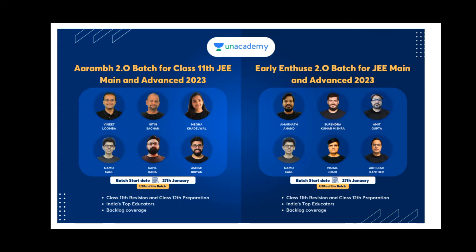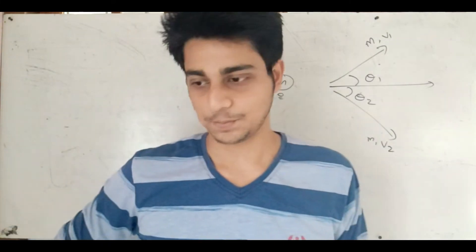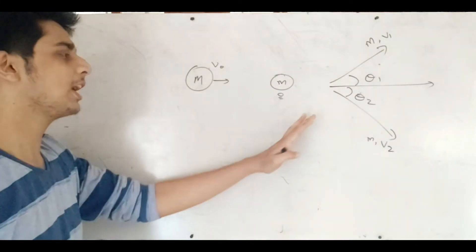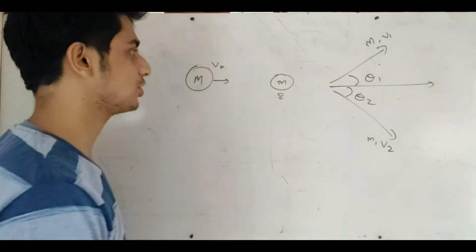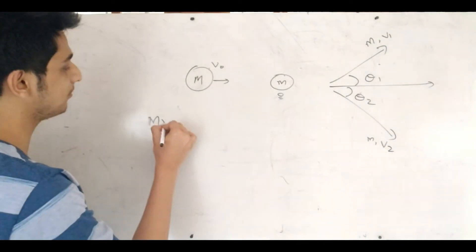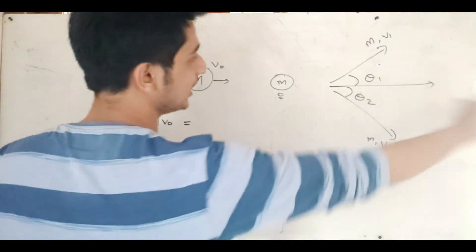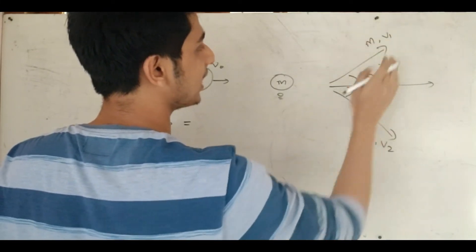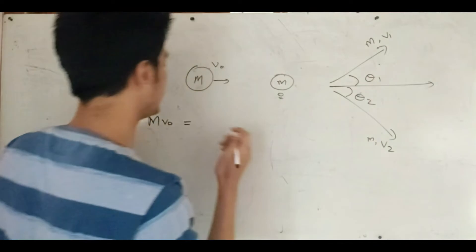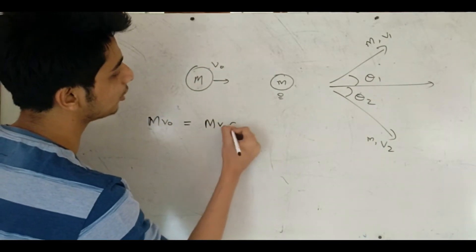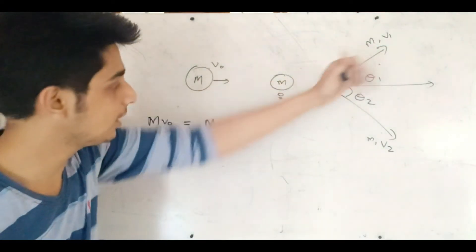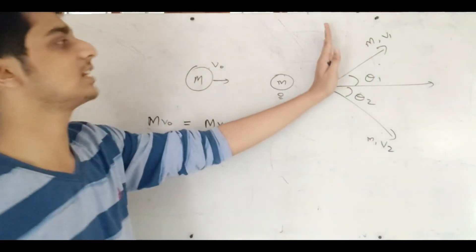I am going to show you how to do it. What have we done with the solution? The solution uses the law of conservation of linear momentum. The initial momentum is MV0, and that equals the final momentum in the x-direction: MV1 cosθ1. We also apply the component in the other direction.